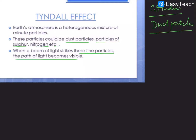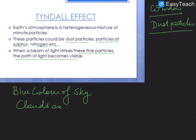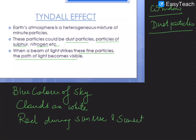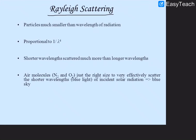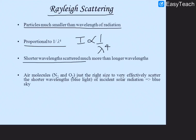Scattering of light helps explain several phenomena: the blue color of the sky, why clouds are white, why the sun appears red during sunrise and sunset, and why danger signals are always red. All of these can be explained with Rayleigh scattering. Rayleigh scattering occurs when the particle size is much smaller than the wavelength of light radiation, and the scattering intensity is inversely proportional to the fourth power of the wavelength — meaning light with a shorter wavelength scatters more.